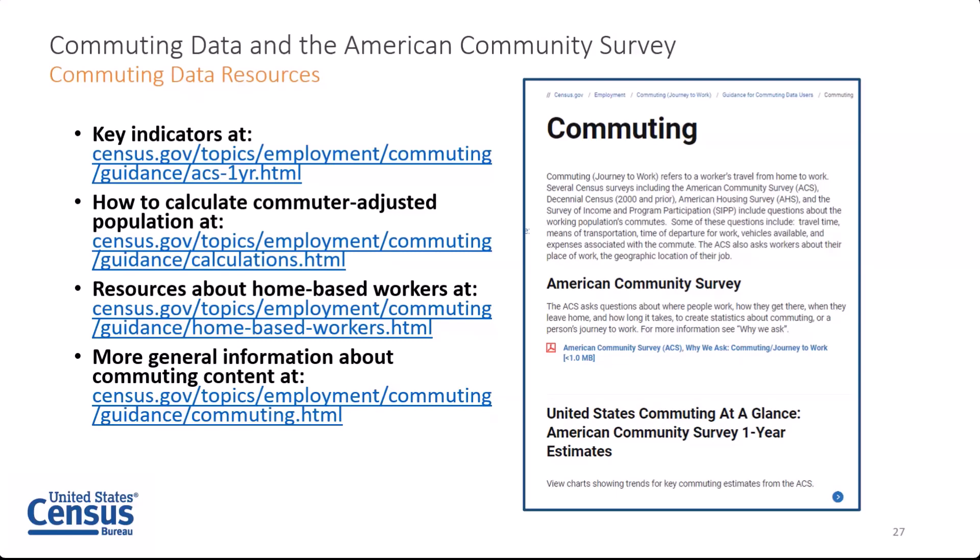When media are discussing the idea of hollowed-out cities due to working from home, commuter-adjusted population estimates are a helpful method of estimating how much those numbers have actually changed in the last few years. We've also recently put up some supplemental information on home-based workers — how they're counted in different surveys and some recent publications concerning trends in home-based work. In general, we encourage folks to check out our main commuting page, which offers this and other information about common inquiries that come up about our data.